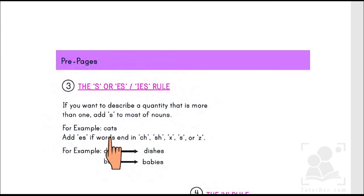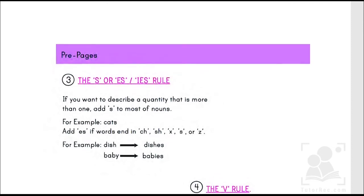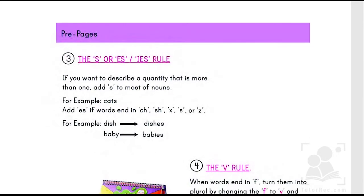If you want to describe a quantity that is more than one, add S to most of the nouns. For example cats. Add ES if words end in CH, SH, X, S or Z. So we need to learn this basic rule that whenever we have to show the plural or the more quantity of nouns we need to add S at the end of the word such as cats.